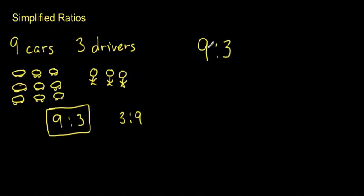Whatever I do to one number, I have to do to the other. So we'll simplify this ratio by saying nine divided by three gives me three, and three divided by three gives me one. So this is the simplified ratio.